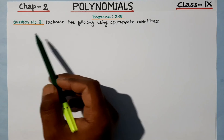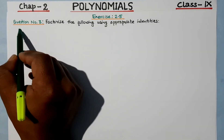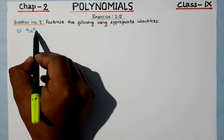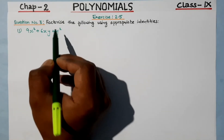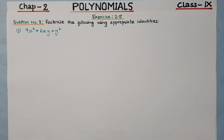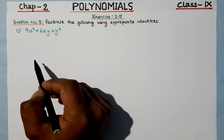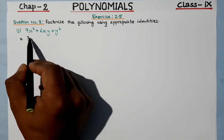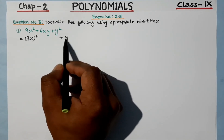The first question is number 1: 9x² plus 6xy plus y². Now, which identity should we use? Looking at the first term and last term — they are perfect squares. We can write 9 as 3x squared, and the last term y is already in square form.